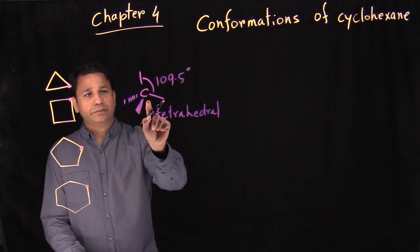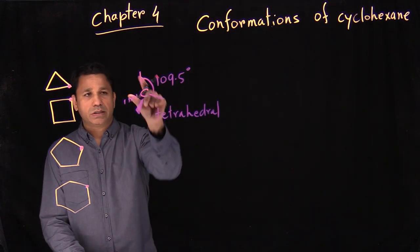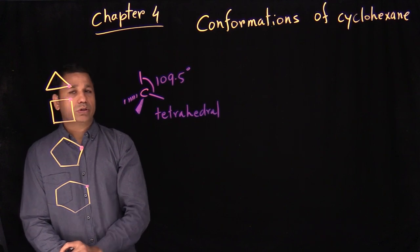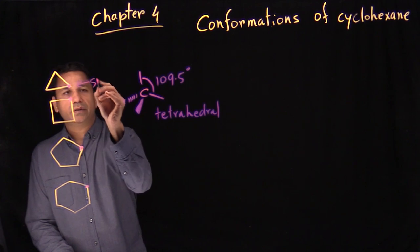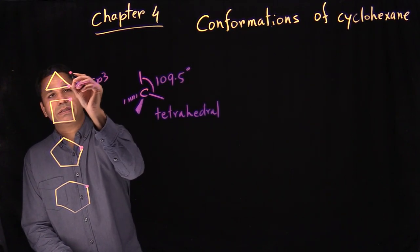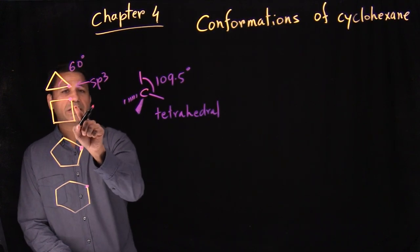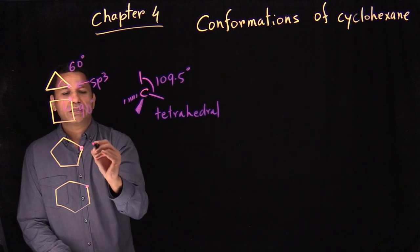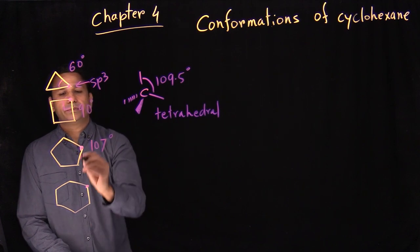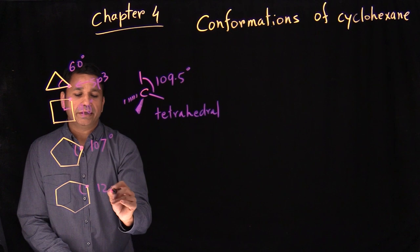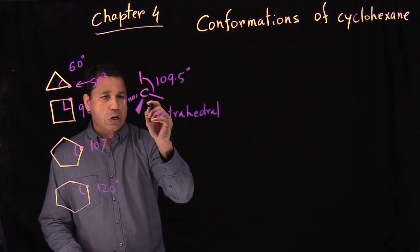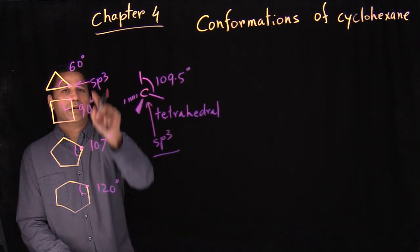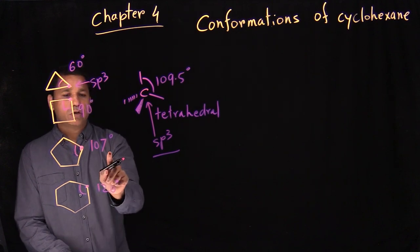If you have sp3 carbon, the bond angle should be 109.5 between any two bonds. Now take a look at the triangle — cyclopropane. The bond angle is actually not 109.5. Even though this carbon is sp3, the bond angle here is 60 degrees. For cyclobutane, it's still sp3 carbon, but the bond angle is 90 degrees because that is a square. Cyclopentane has a bond angle of 107 degrees, and cyclohexane has 120 degrees.